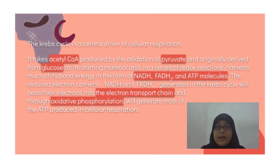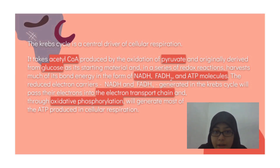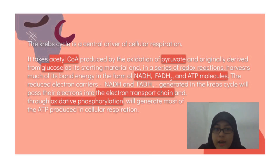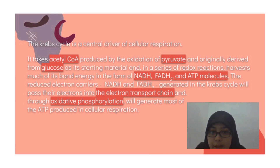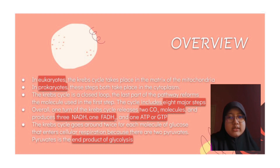Whatever you prefer to call it, the citric acid cycle is the central driver of cellular respiration. It takes acetyl-CoA — produced by the oxidation of pyruvate and originally derived from glucose — as its starting material, and in a series of redox reactions harvests much of this bond energy in the form of NADH, FADH2, and ATP molecules. The reduced electron carriers NADH and FADH2 generated in the TCA cycle will pass their electrons into the electron transport chain and, through oxidative phosphorylation, will generate most of the ATP produced in cellular respiration.